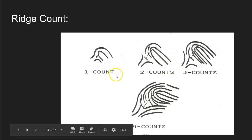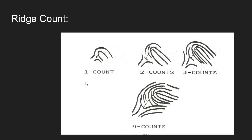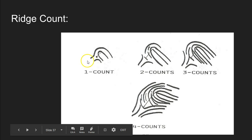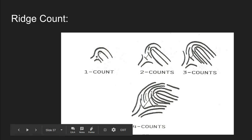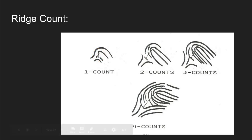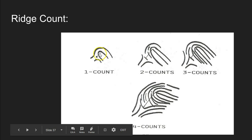Here are some examples of ridge counts. On this fingerprint we see the type lines and the delta. We can see the innermost recurve with no spikes, so we place our core on the outer shoulder. If we draw an imaginary line between the delta and the core — remember we don't count the delta or the core — our imaginary line crosses only one ridge. It must cross at least one recurving ridge, so this fingerprint has a ridge count of one.